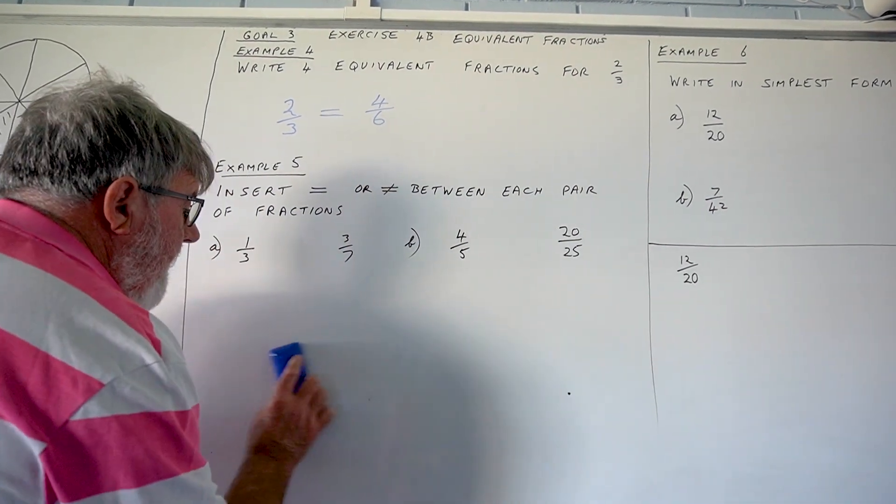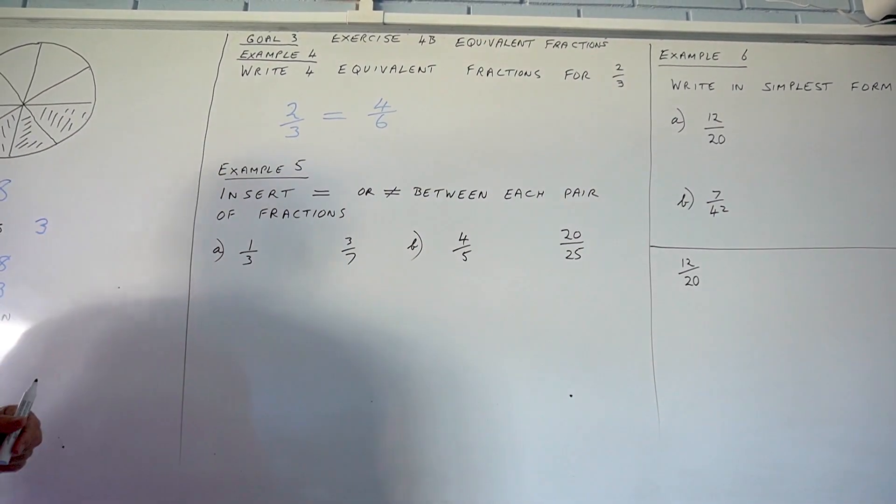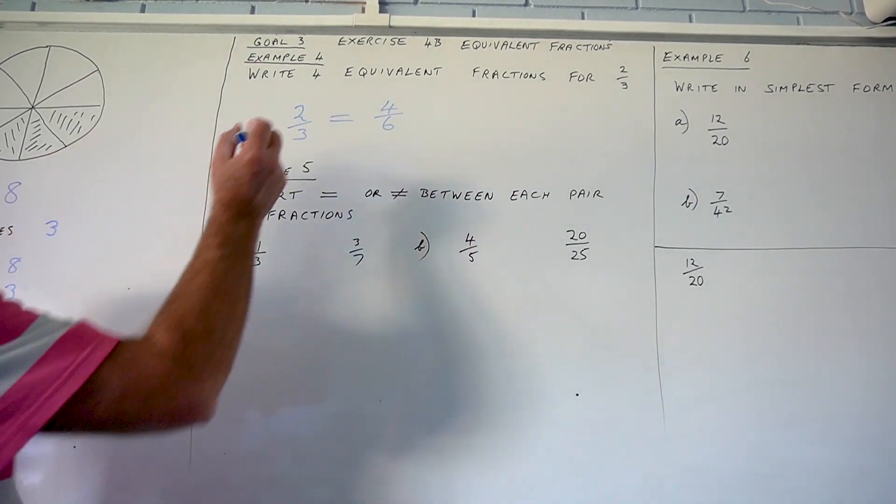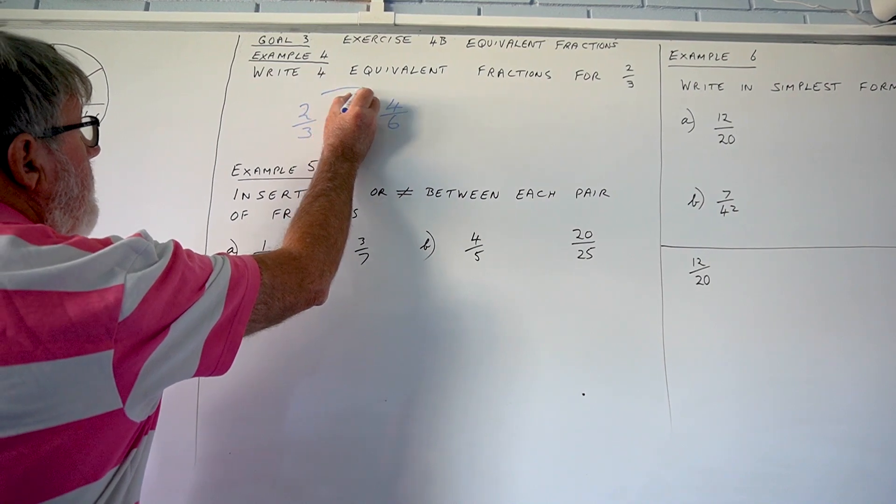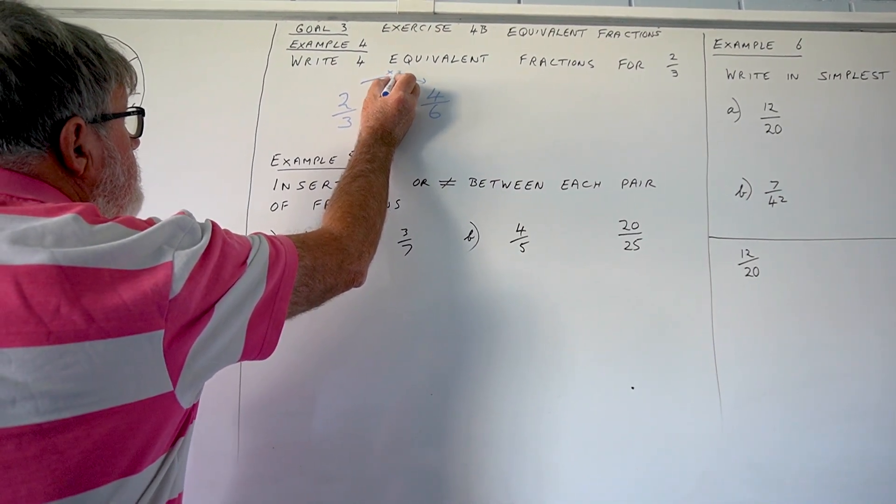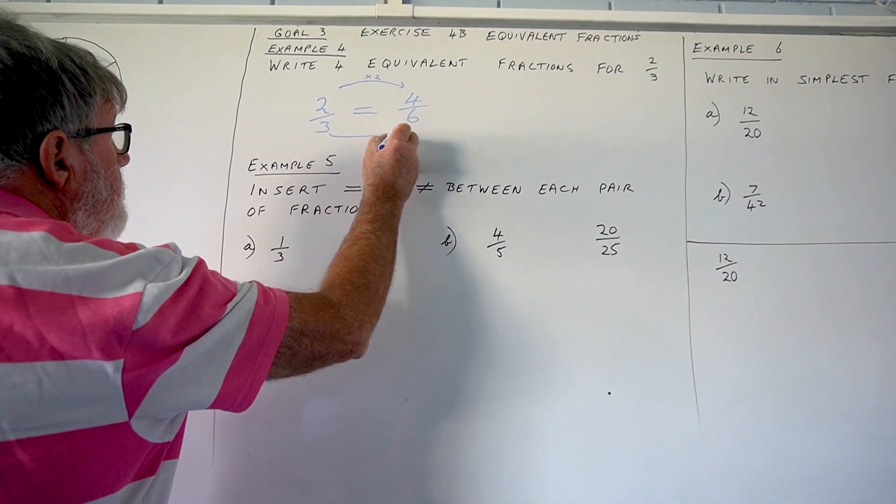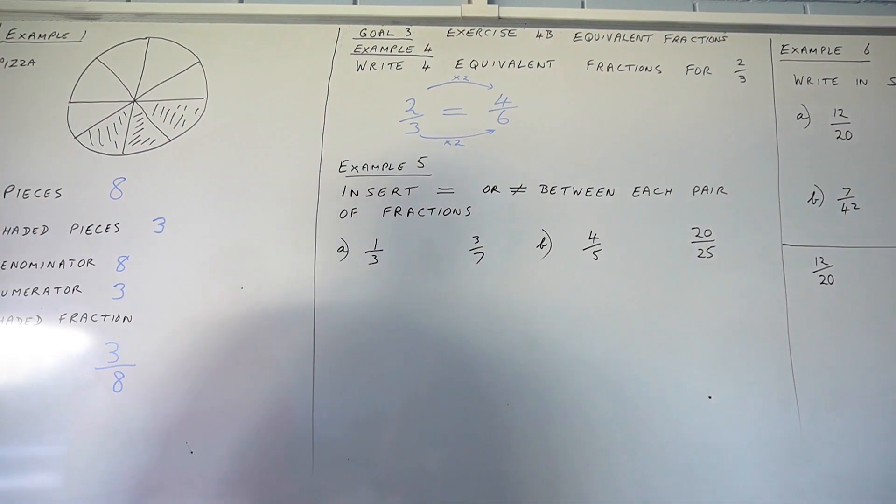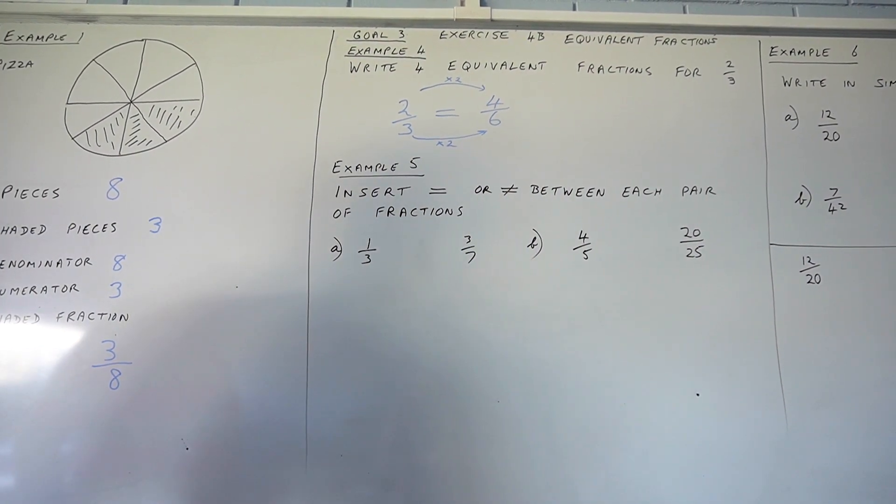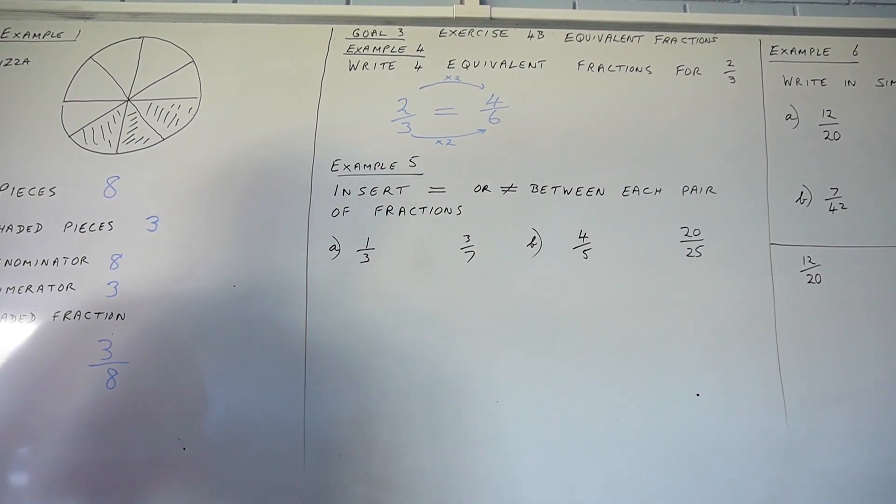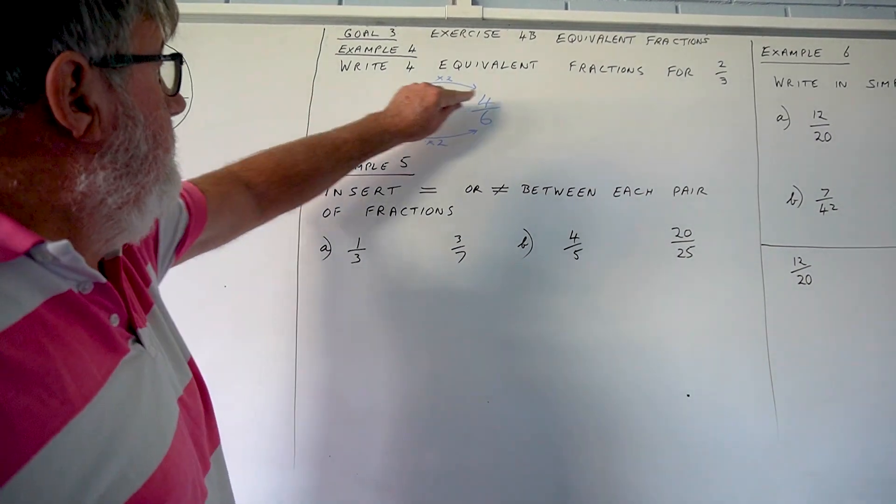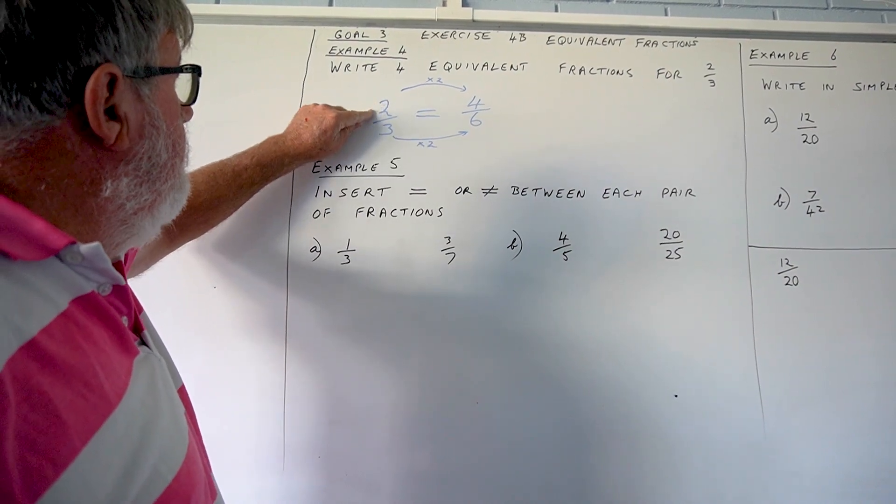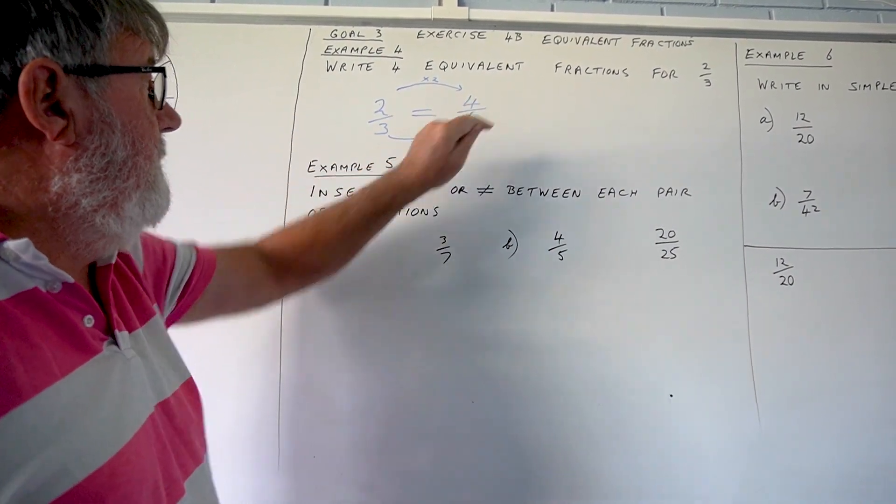But, we can do that without drawing diagrams, by recognizing that as long as you do the same operation, in this case multiplying by 2, and the only operations you can do are multiply or divide, as long as you do the same operation to the numerator and denominator, your fraction stays the same. So, 2 times 2 is 4, 3 times 2 is 6, 2 thirds is the same as 4 sixths.